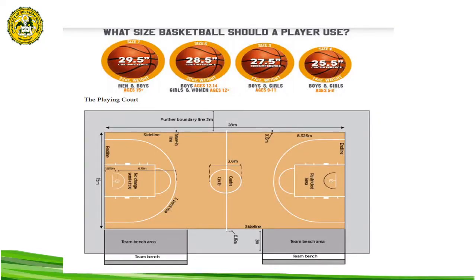The only essential equipment in a basketball game is the ball and a court — a flat rectangular surface with baskets at opposite ends. Competitive levels require the use of more equipment such as clocks, a score sheet, scoreboards, alternating possession arrows, and a whistle-operated stop-clock system. The basketball court is the playing surface consisting of a rectangular floor with baskets at each end.